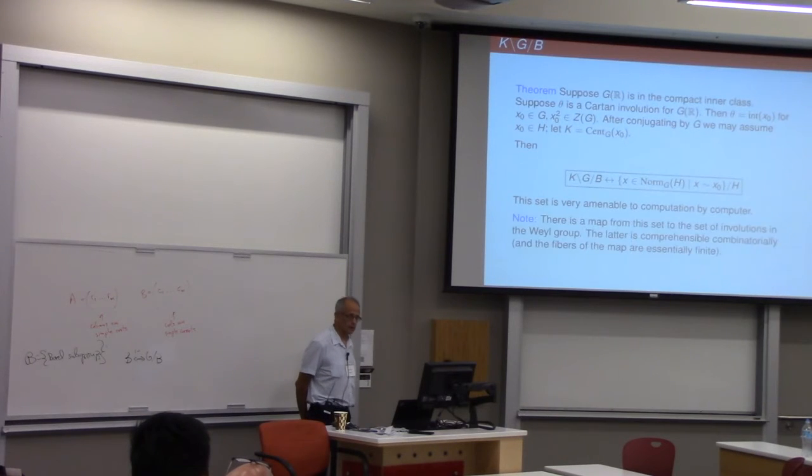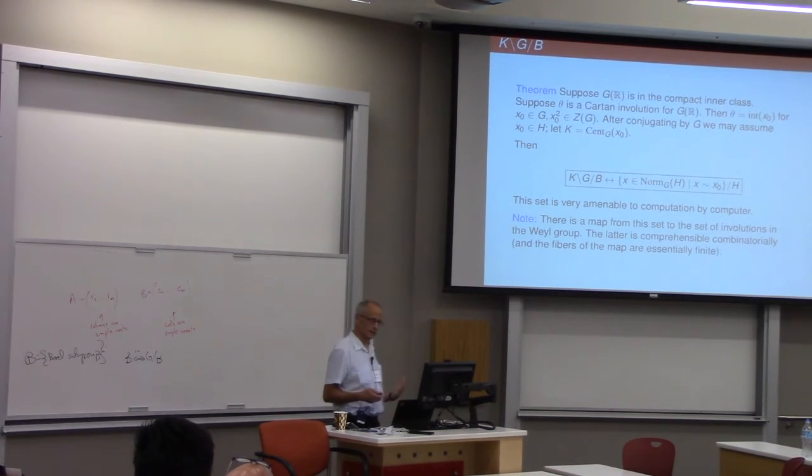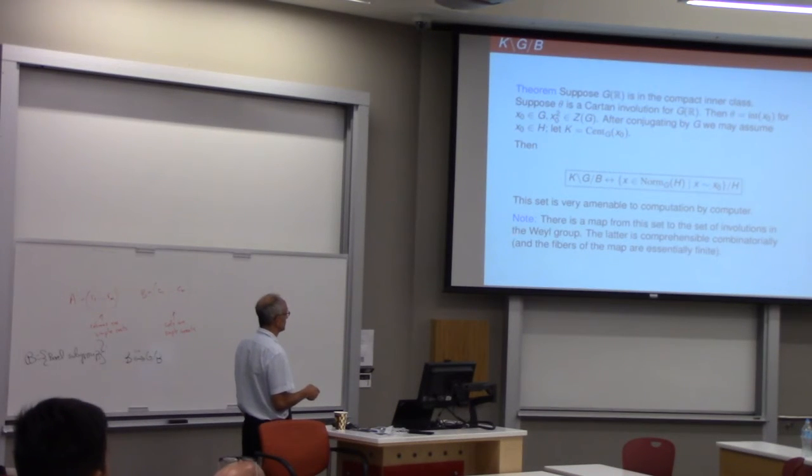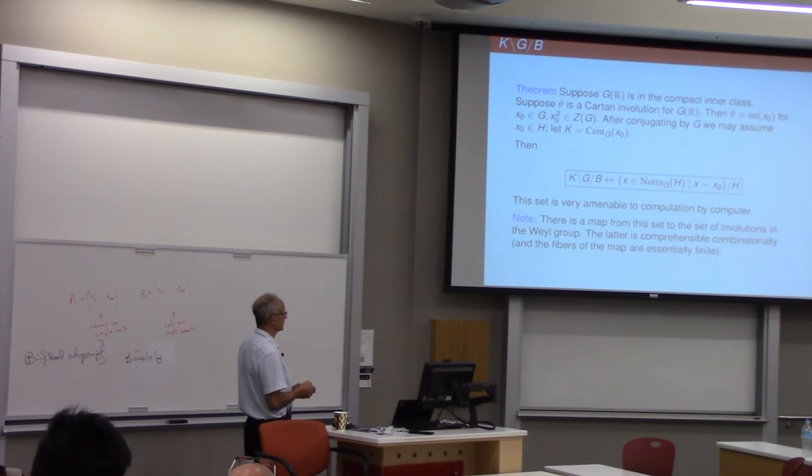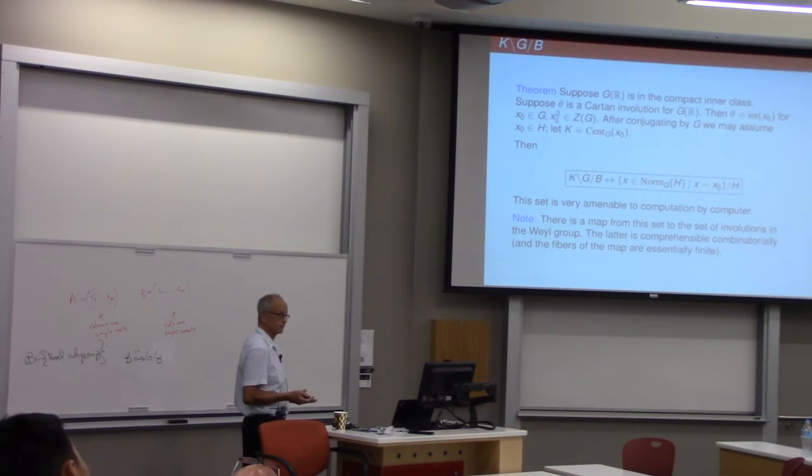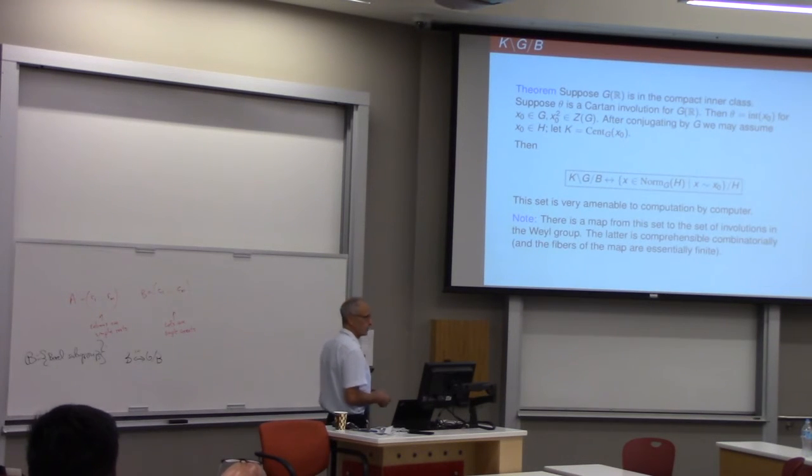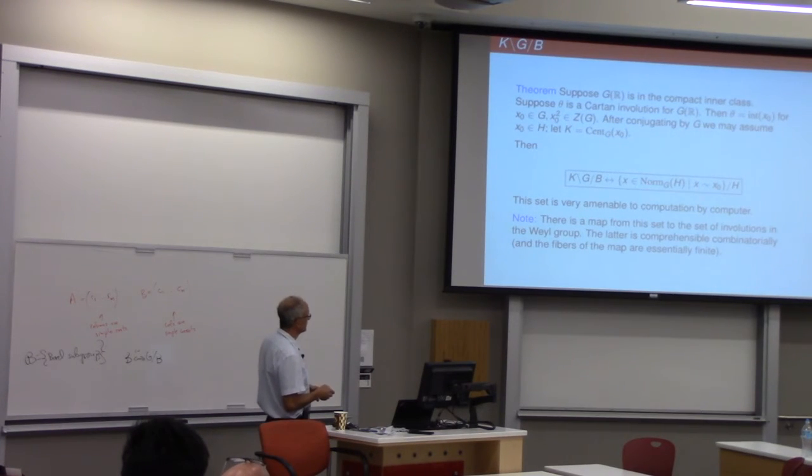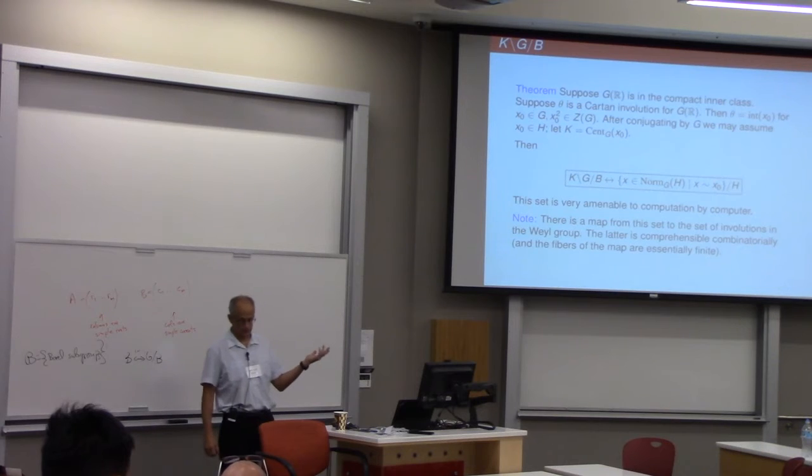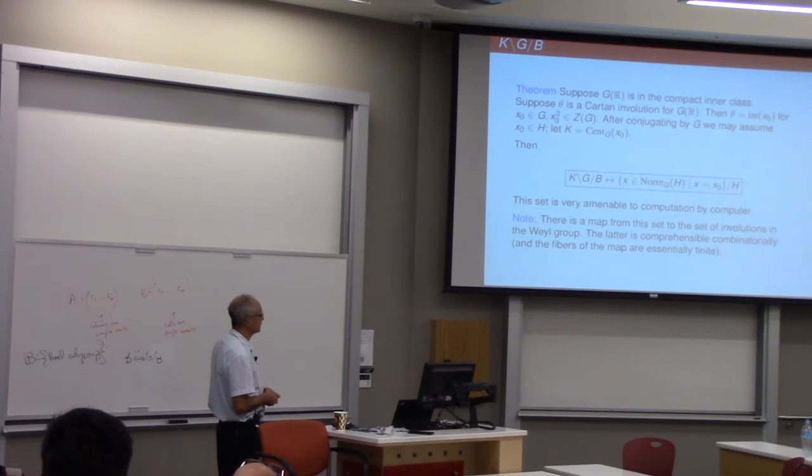So notice that, just to get a sense of it, there's a map from this set to the set of involutions in the Weyl group, taking this element X to its image in the Weyl group. There's the normalizer of H, actually modulo H itself the subgroup, that's an element of the Weyl group. And the fact that X squared is central says that this X in the Weyl group is an involution. So the set of involutions in the Weyl group, that's a very beautiful combinatorial object. You can think about that in lots of different ways. And this set is closely related to that. In fact, the fibers of the map to the involutions in the Weyl group are, I said essentially finite. Well, actually, do I bring it down here? I think it's literally finite. I think that's correct, anyway.